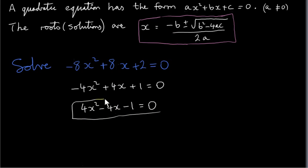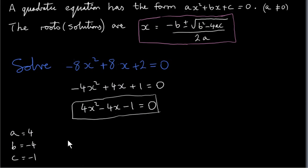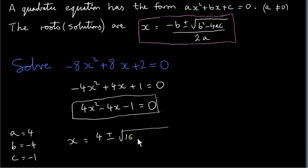I will apply the formula to the version 4x squared minus 4x minus 1 equals 0. So a, the coefficient of x squared, is plus 4. b, the coefficient of x, is minus 4. c, the constant term, is minus 1. Plugging in: x equals minus b, so minus minus 4, that's plus 4, plus or minus the square root of b squared minus 4ac. b squared is minus 4 squared, which is plus 16. Minus 4 times 4 times minus 1: minus 4 by plus 4 is minus 16, and minus 16 by minus 1 is plus 16. All divided by 2 times 4, which is 8.